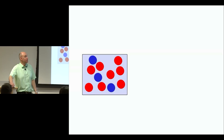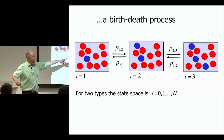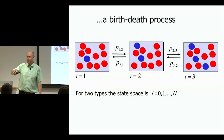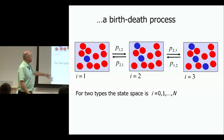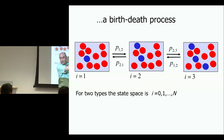The Moran process is a birth-death process — a specific kind of Markov process — because in its one-dimensional state space you can make one step forward or one step backward at most, or stay in the same place. So from one blue individual, the process can go to two blue individuals; two blue can go back to one or forward to three, but you can only make one step. This is the definition of a birth-death process.